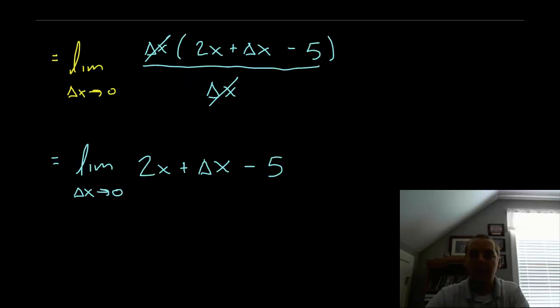Well now if we try to evaluate this limit analytically again by just letting the delta x be zero, we see that there's no more problems with letting it be zero. It's totally fine. If you want to let this delta x be zero, we no longer get division by zero. And our final answer is 2x minus 5.